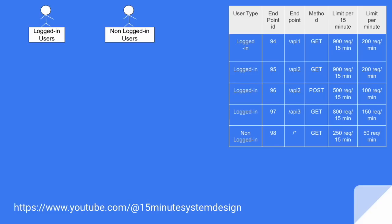Let's do this for our real users. There can be two types of users: logged-in users and non-logged-in users. We want to build a system for both types, but we want to have a dedicated quota for each API endpoint for logged-in users. For non-logged-in users, we want to have a cumulative rate limiter across all API endpoints.